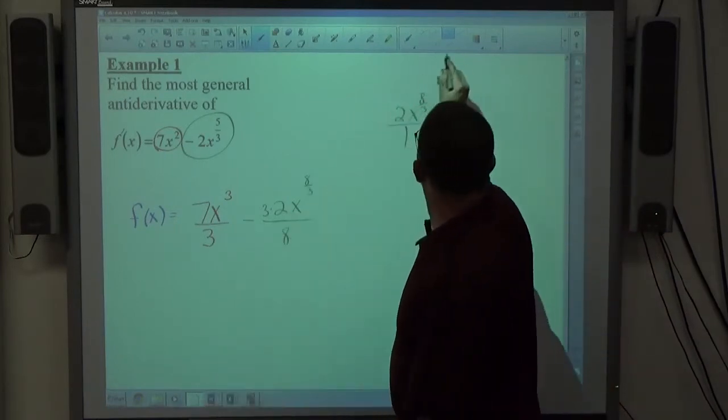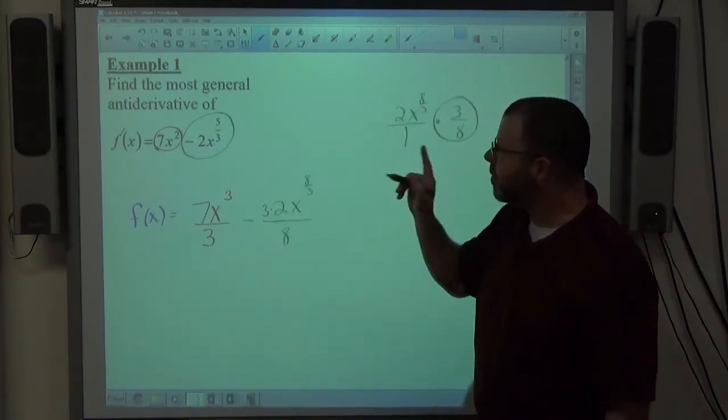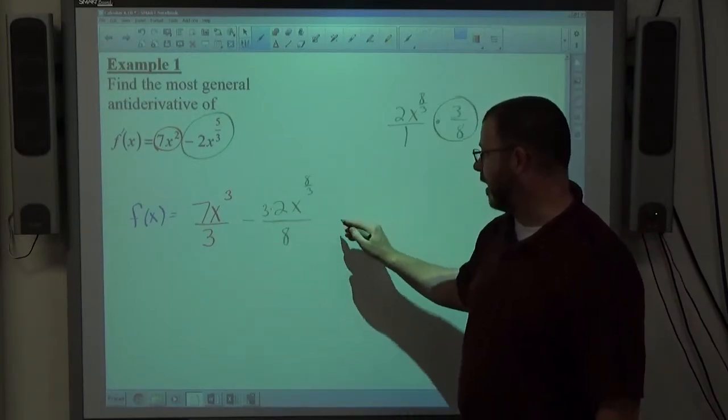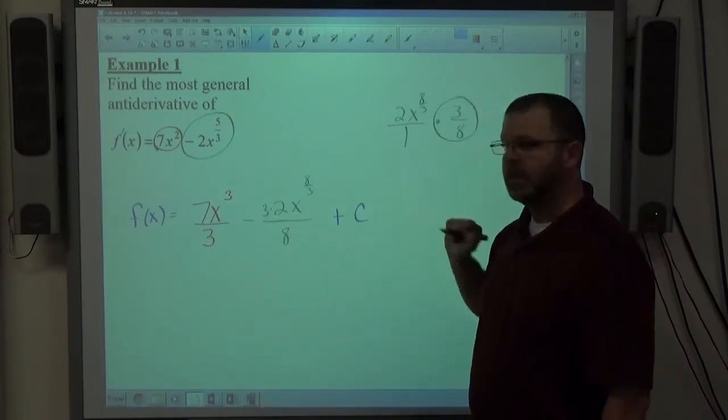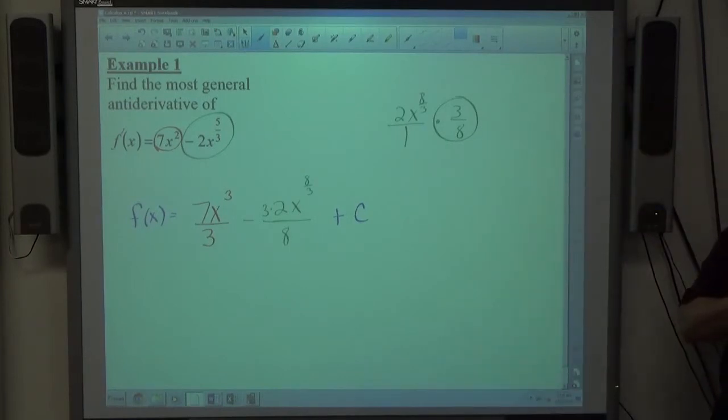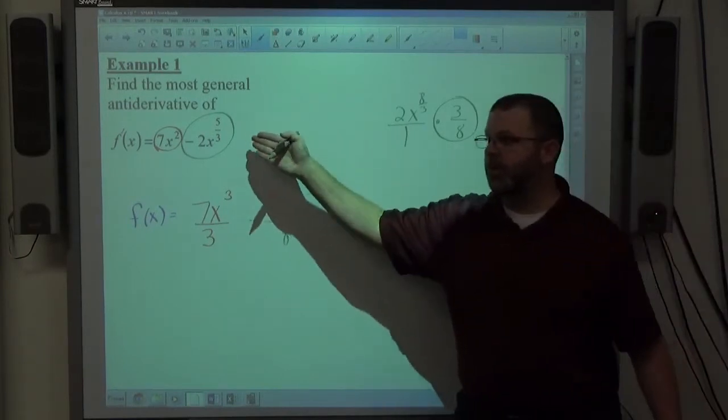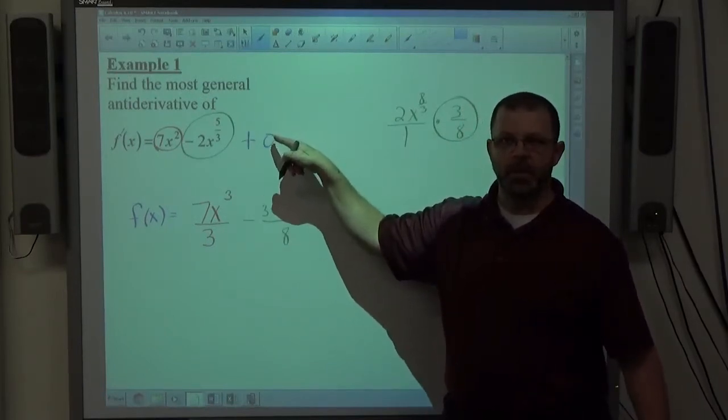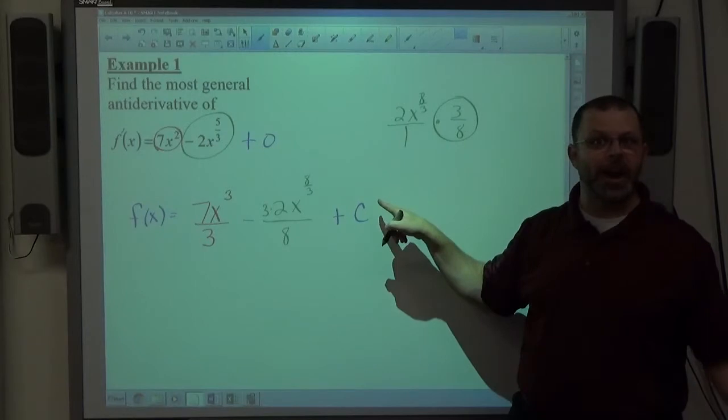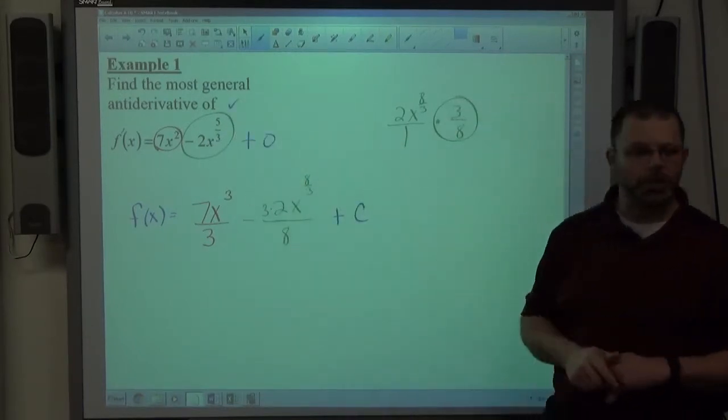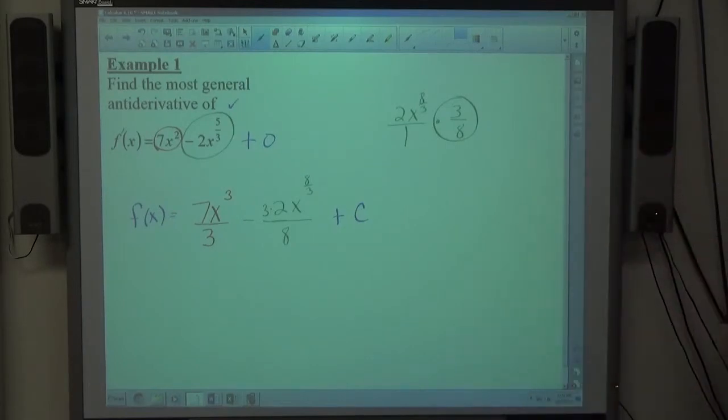If I'm finishing this up with one last thing, whenever you find an anti-derivative, there's a possibility the original function had a constant. What's the derivative of a constant? Zero. So if I'm looking at the derivative, there's officially a plus zero attached to every derivative. That could have come from some constant that I have no idea about. So anytime you find the most general anti-derivative, you're going to put a plus c on that.